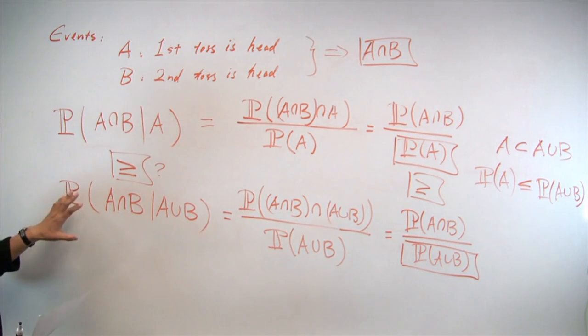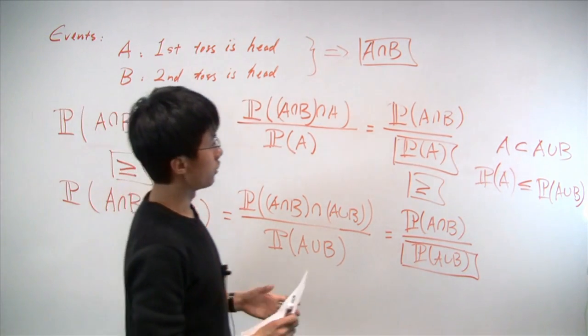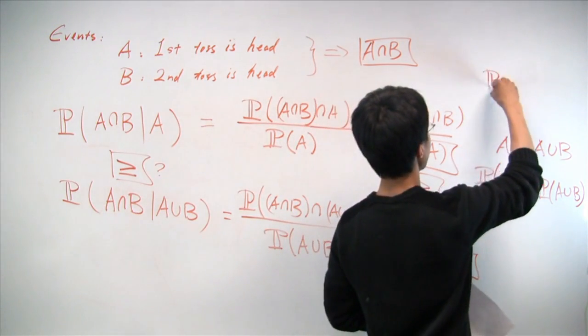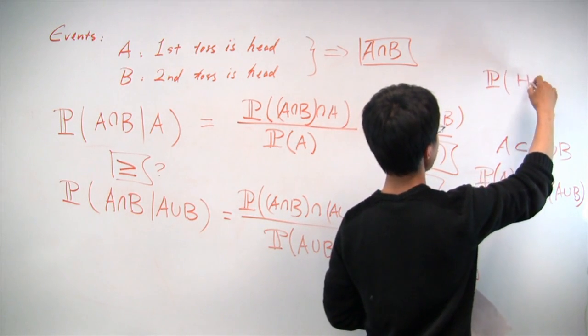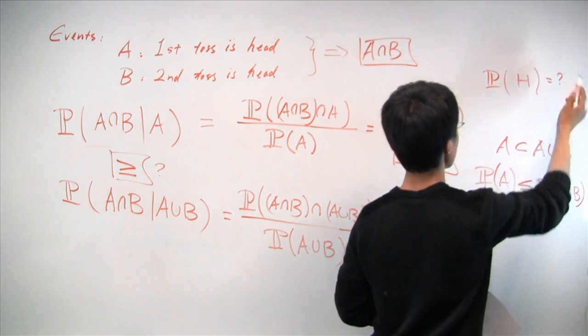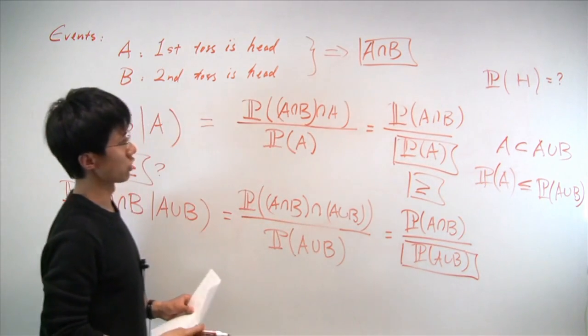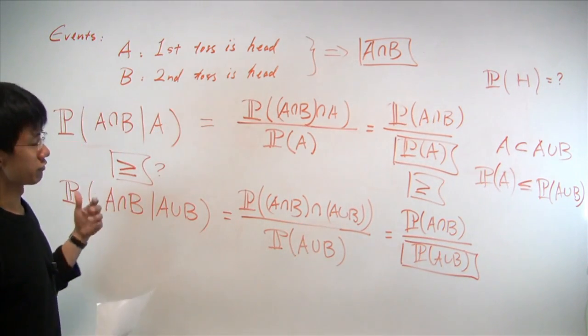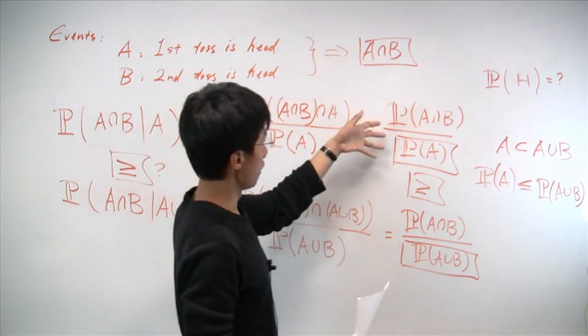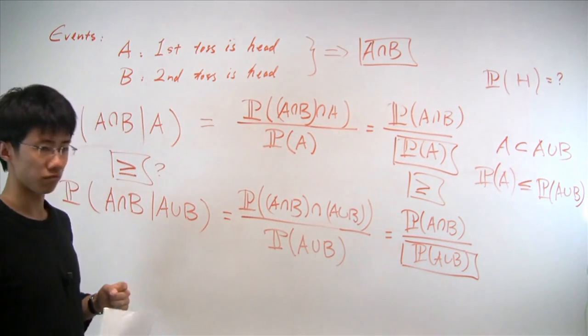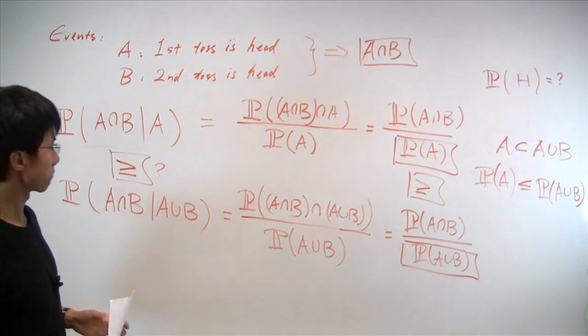So throughout this problem, we never use the fact that the probability of a particular coin toss results, let's say, in a head, a certain number. Actually, this bias for the coin is irrelevant. Whether the coin is fair or unfair, this fact is always true. So indeed, it does not depend on the probability of the coin.